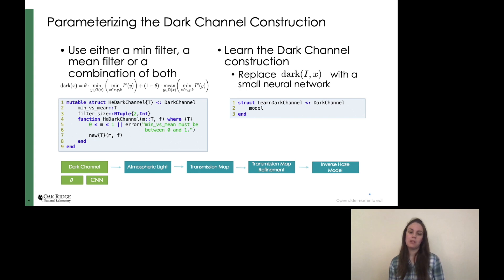In our Julia implementation, we defined a new type for each new parameter and an abstract type for the parameter family. So in this case, we have two types: one that wraps the theta learning to either use a min filter, a mean filter, or a combination of both, and the other that wraps the convolutional neural network model. And we introduce an abstract type, dark channel, to represent this parameterization family.